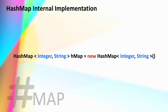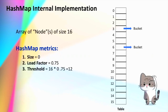Whenever you initialize a HashMap in your program, the first thing Java does is initialize an array of nodes of size 16. What a node actually is we will understand in the later part of this video, but as of now just understand that whenever we declare any HashMap, JVM allocates an array of size 16 in memory. Internally, our HashMap has a few properties which are called the HashMap metrics.